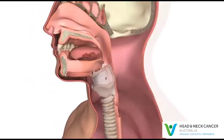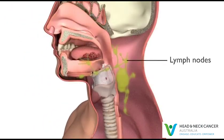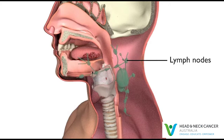Oral cancer can sometimes spread into the lymph nodes, causing a lump to appear in the neck. Lymph nodes are bean-shaped glands in the neck that are part of the immune system's defence against infection.